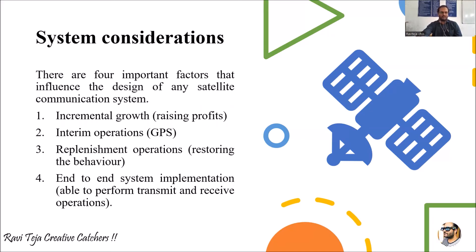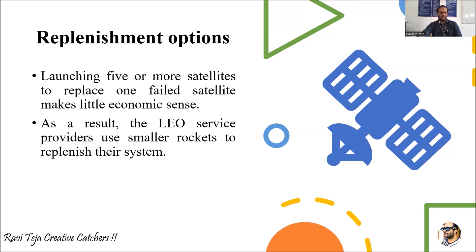The third factor is replenishment operations, meaning restoring or replacing failed satellites. Launching five or more satellites to replace one failed satellite makes little economic sense. If a satellite fails in the GEO system, sending a new satellite to that huge distance requires a high-efficiency rocket, making it very costly.